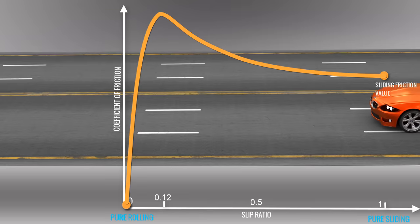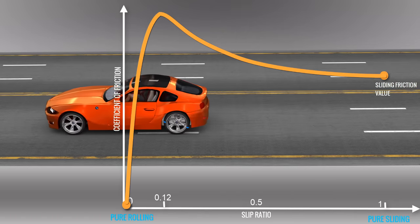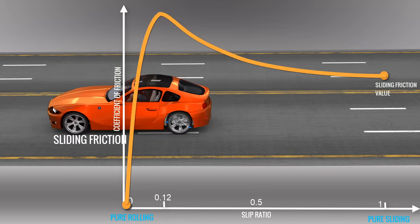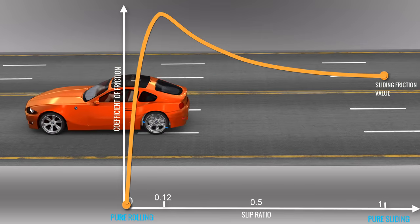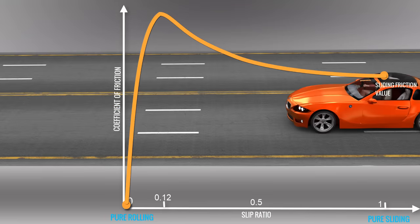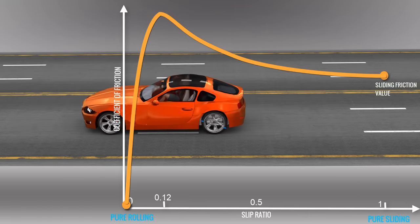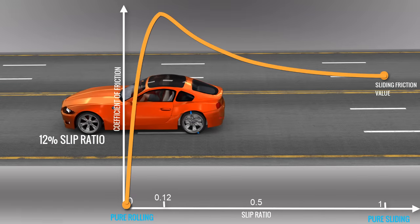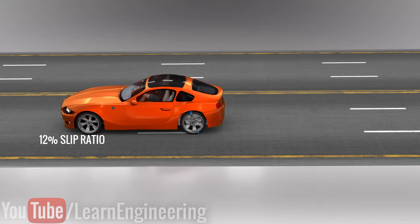During braking without ABS, the frictional coefficient which comes into effect is predominantly sliding friction. However, in ABS braking, the clever algorithm adjusts the brake pressure to keep the slip ratio near to 12%, where the frictional value is at the maximum. This significantly reduces the braking distance.